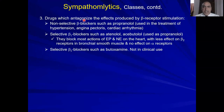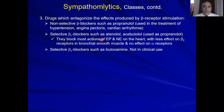Non-selective beta blockers such as propranolol are used in treatment of hypertension, angina, and cardiac arrhythmia. Selective beta-1 blockers such as atenolol, acebutolol, metoprolol, and bisoprolol are used similarly to propranolol but are more selective. They do not affect beta-2 receptors in the lung, which is a good advantage specifically for asthmatic patients. Selective beta-2 blockers such as butoxamine are not in clinical use.